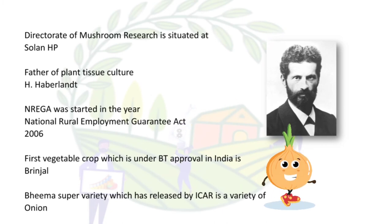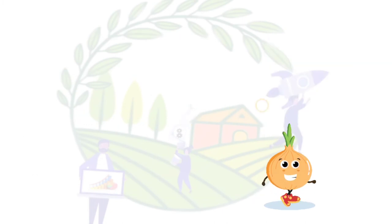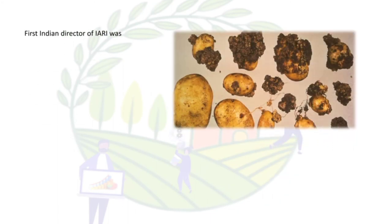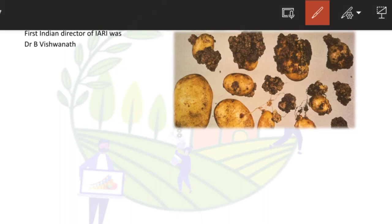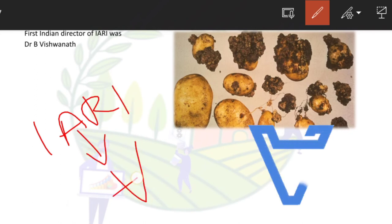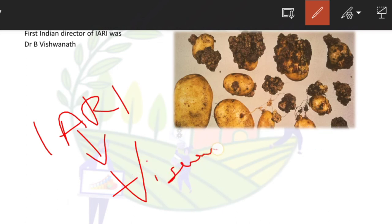Bima super variety was released by IARI for onion — Bima onion. The first Indian director of IARI was Dr. B. Vishwanath — remember IARI: inverse the letters to get a hint.